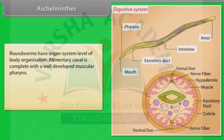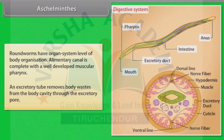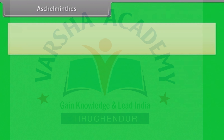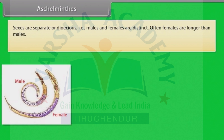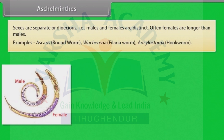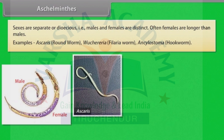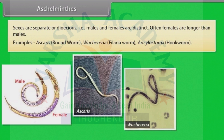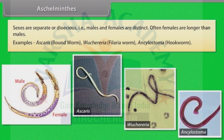The alimentary canal is complete with a well-developed muscular pharynx. An excretory tube removes body waste from the body cavity through the excretory pore. Sexes are separate, that is dioecious — males and females are distinct. Often females are longer than males. Examples: Ascaris, that is roundworm; Wuchereria, that is filarial worm; and Ancylostoma, that is hookworm.